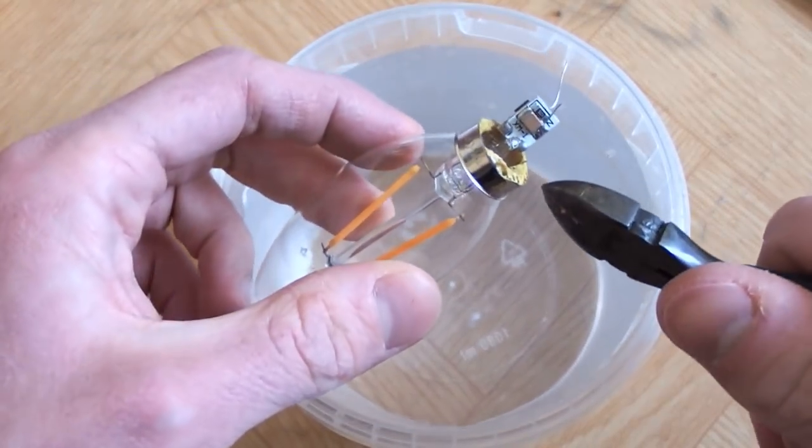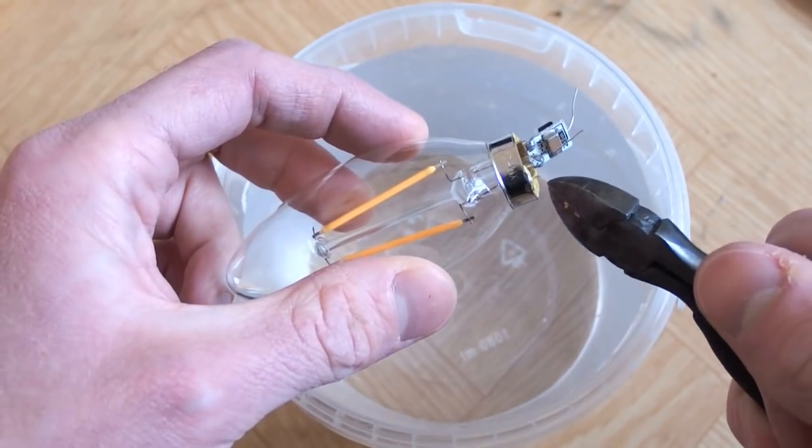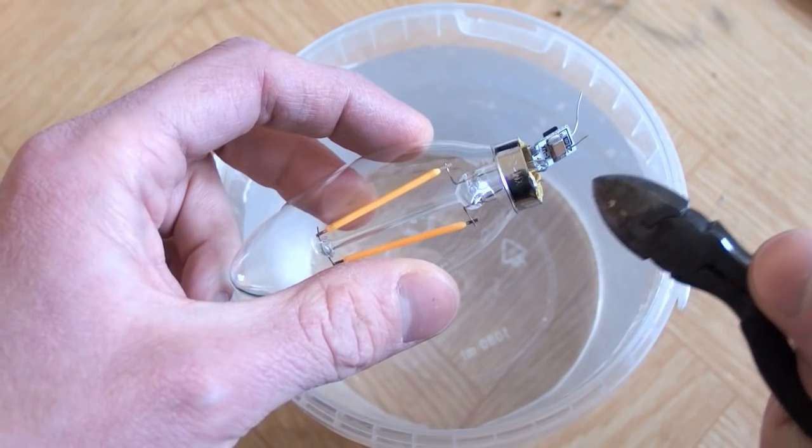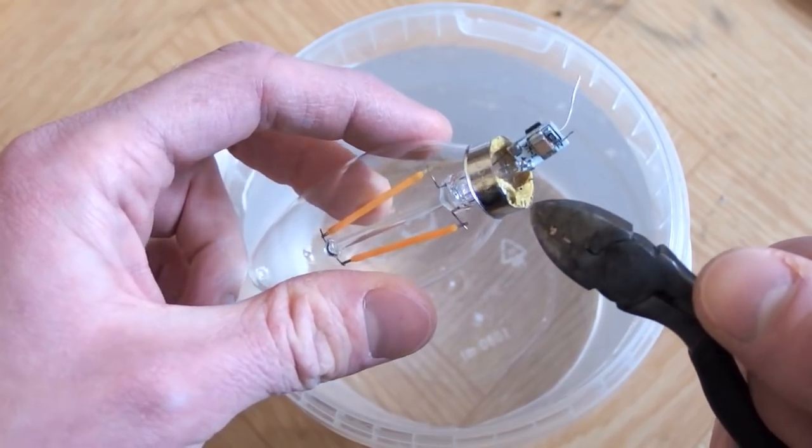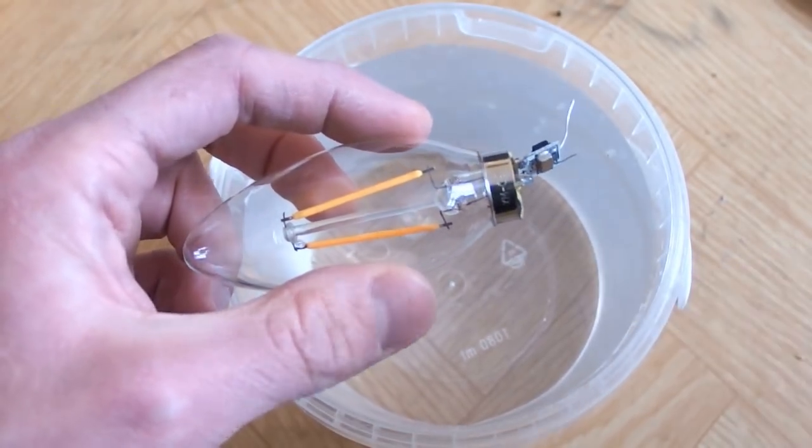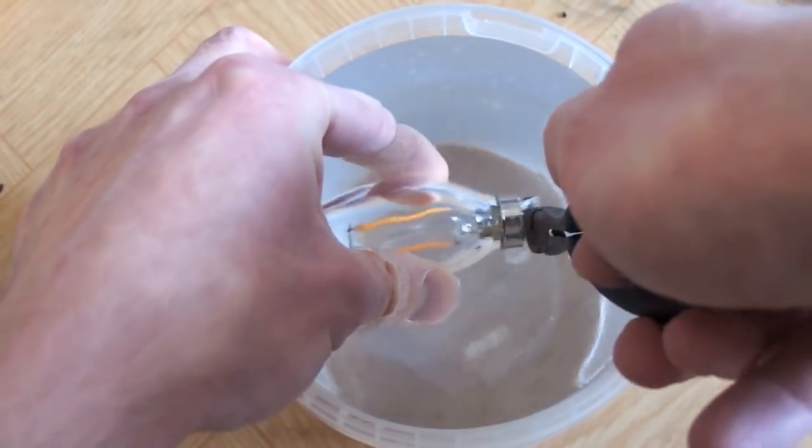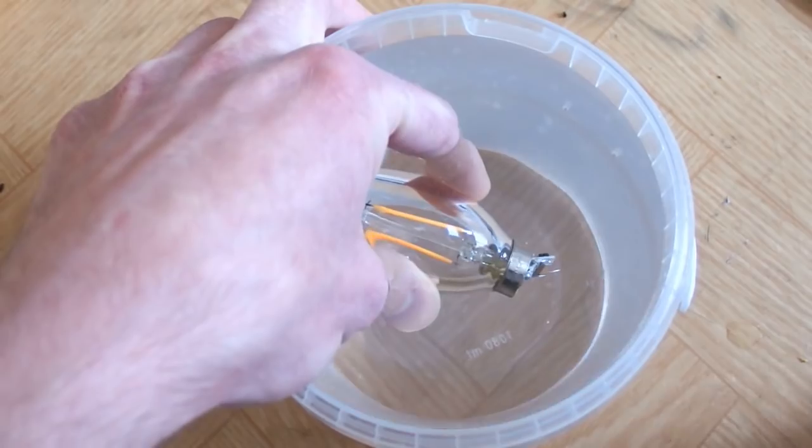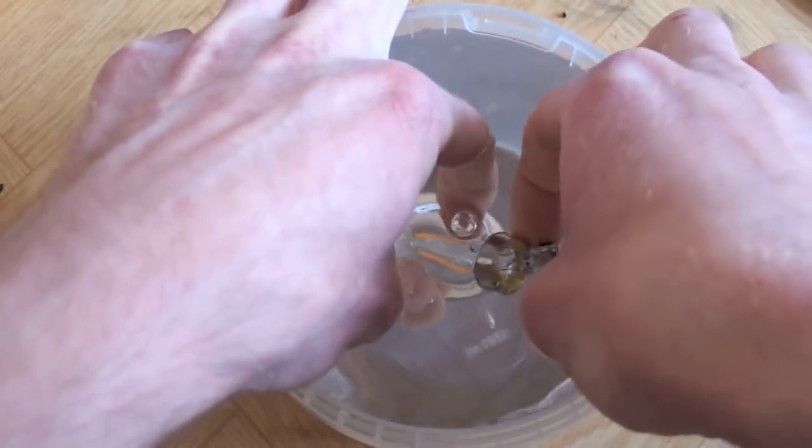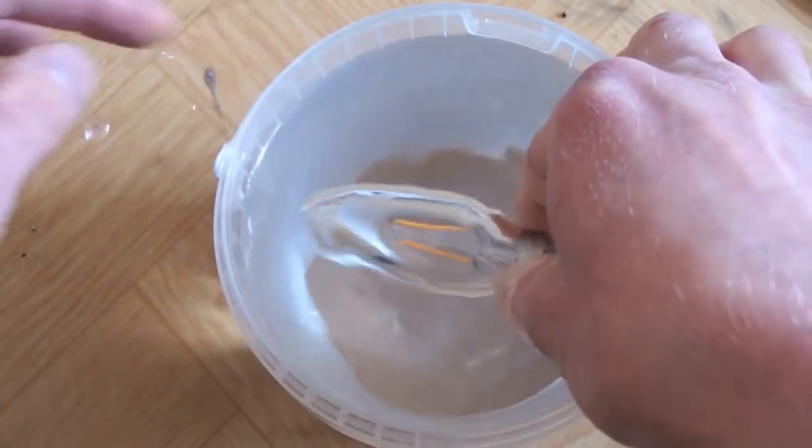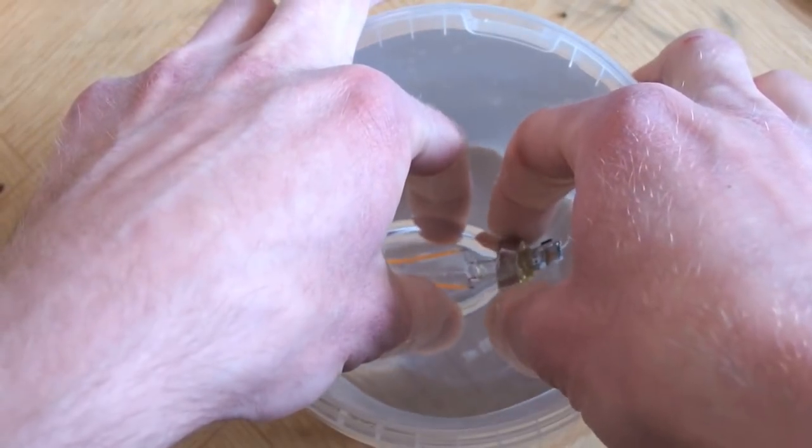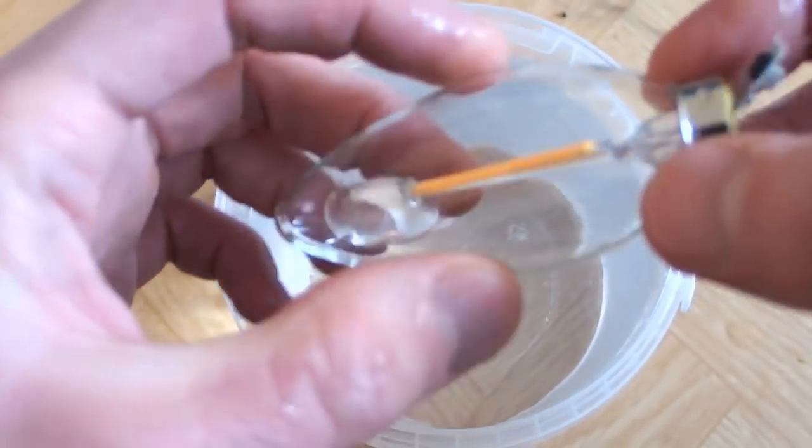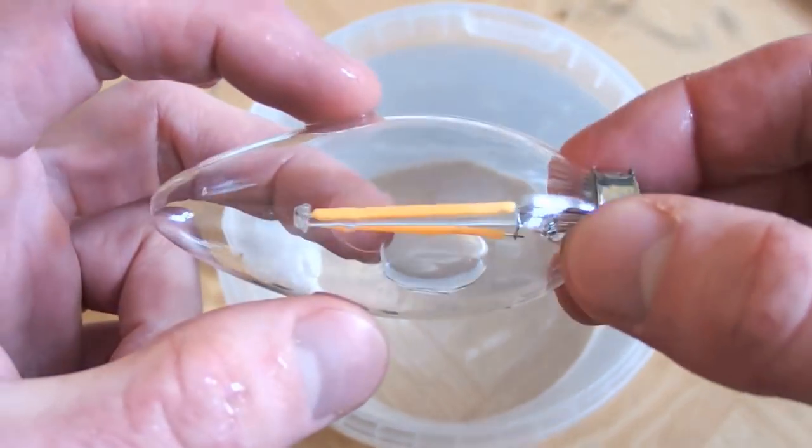I will open the stem underwater and see what happens. If bubbles come out, it means there is overpressure. If the water will be sucked in, there is vacuum or low pressure. And if nothing happens, there is atmospheric pressure in it. It's immersed in water. I just broke the stem. Nothing seems to happen. No bubbles. No water is sucked in. So it appears to contain a pressure almost equal to atmospheric pressure.